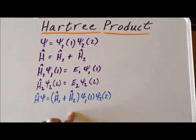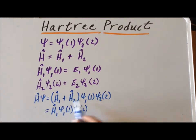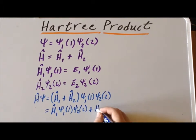Next, we have this sum of operators act on our Hartree product, and since the operators are linear, we can write them this way. So that's the first operator acting on the product, plus the second operator, Ĥ₂, acting on the product.